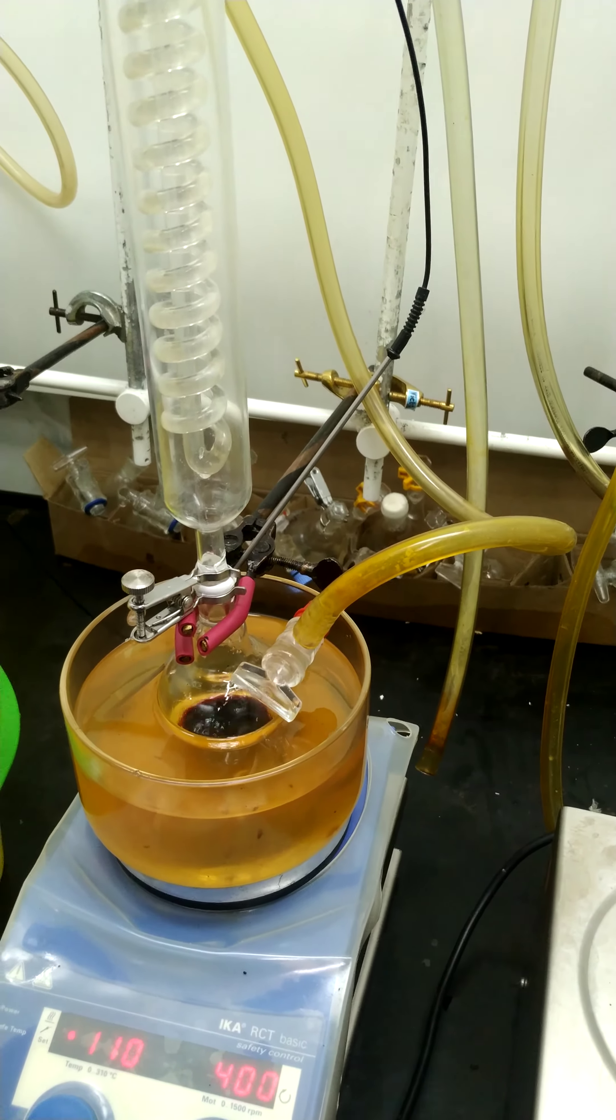You can see the schlenk line is at the back. The condenser is connected to the schlenk line through this pipe. You can always remove volatile components by applying vacuum. This is why reflux is an important technique we use for reactions.